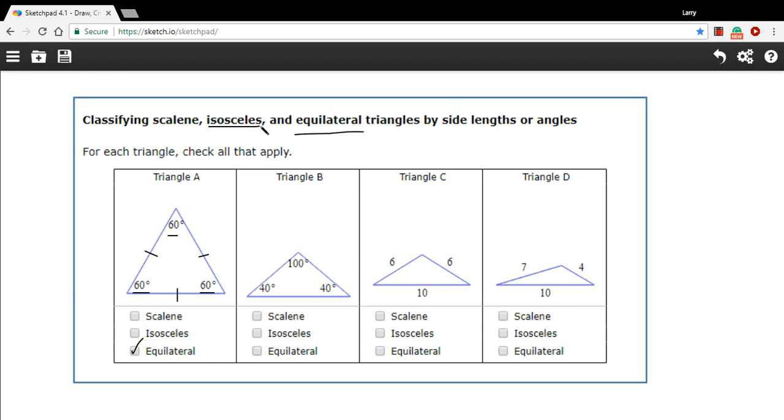An isosceles triangle is the one where there are two sides the same and one different. And so in C here, you can see we've got 6 and 6 and a 10, so this is an isosceles triangle.